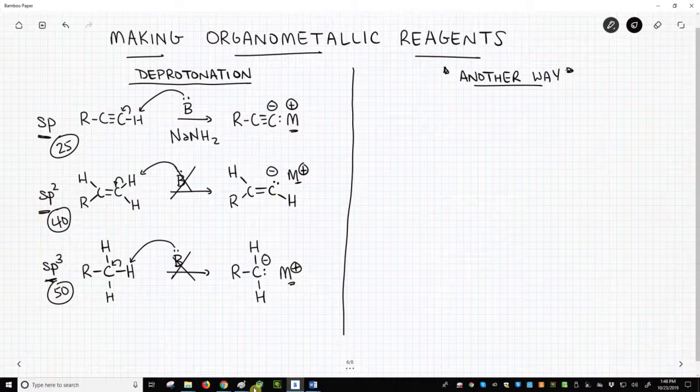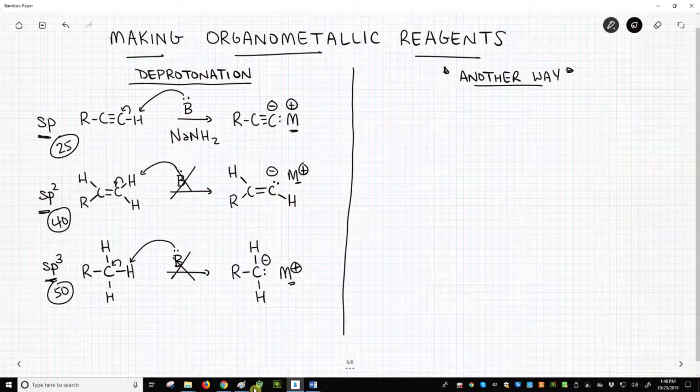The most common solution for this problem, for the SP2 and SP3 hybridized carbons, is to start with a carbon-halogen bond. Let's go with bromine.